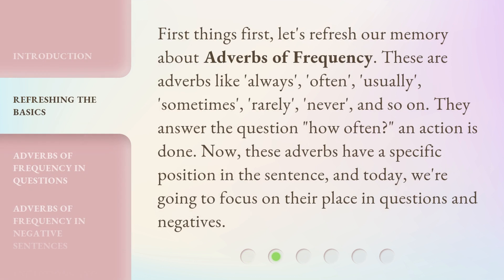First things first, let's refresh our memory about adverbs of frequency. These are adverbs like always, often, usually, sometimes, rarely, never, and so on. They answer the question 'how often' an action is done. Now, these adverbs have a specific position in the sentence, and today we're going to focus on their place in questions and negatives.